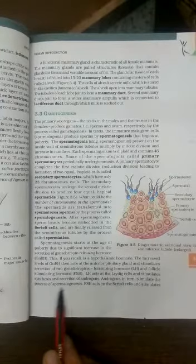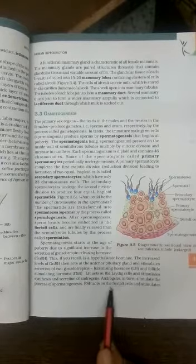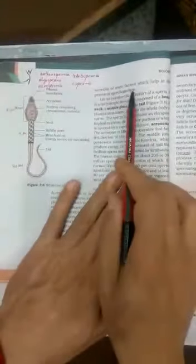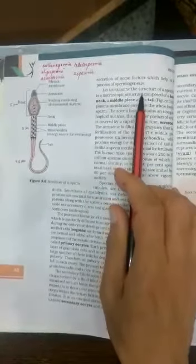FSH acts on the Sertoli cells. F stands for feeding, so Sertoli cells provide feeding. The Sertoli cells not just provide feeding but also release certain factors which are required for the process of spermiogenesis. We will talk about this page in the next class.